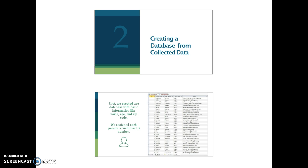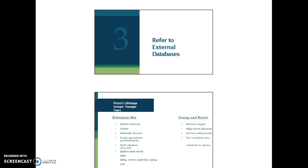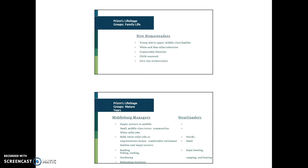They created a database in Access with basic information — each person had a customer ID number, as we talked about. Then they referred to PRISM, which is a geographic lifestyle database. PRISM has defined a bunch of different lifestyles — 30 or 40 or more. Some of the lifestyles include mobile urbanites, liberal, ethnically diverse. Bohemian mix is the name of one of the lifestyles; young and rustic was another. They looked at life stage groups also. A lot of their people were new homesteaders; some of them were Middleburg managers. This is all based on zip code.